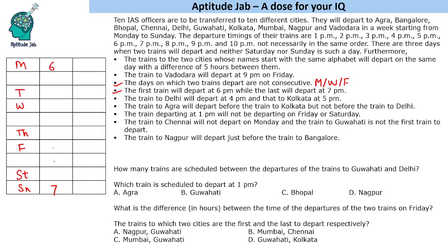The train departing at 1 PM will not go to Chennai, and Guwahati is not the first train. The train to Nagpur will depart just before the train to Bangalore. The first statement says the trains to two cities whose names start with the same alphabet will depart on the same day with a difference of five hours — that's Bangalore and Bhopal. Nagpur departs one day before Bangalore, and Bangalore and Bhopal depart on the same day.